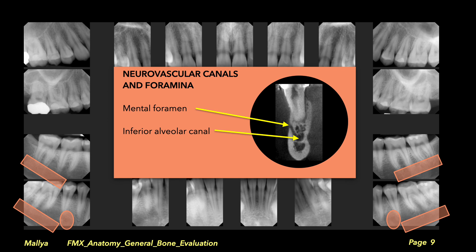The third category of anatomic radiolucencies are the neurovascular canals and foramina, easily identified based on their characteristic location. In the posterior mandible, identify the mandibular canal and the mental foramina bilaterally. The mental foramina are typically located between the roots of the premolars. Often the image of the mental foramen is superimposed over the root apex of a premolar, and it is important to distinguish it from apical periodontal disease. An intact lamina dura and PDL space around the root apices will indicate absence of apical periodontal pathology.